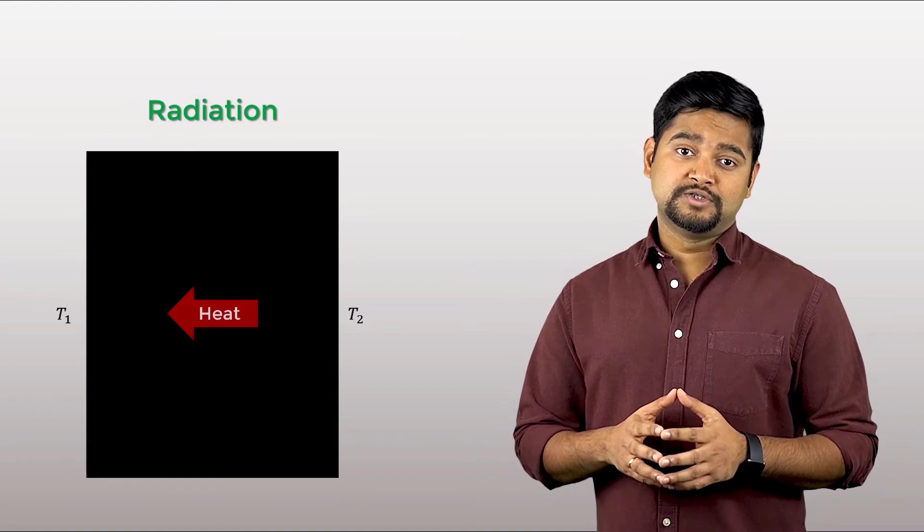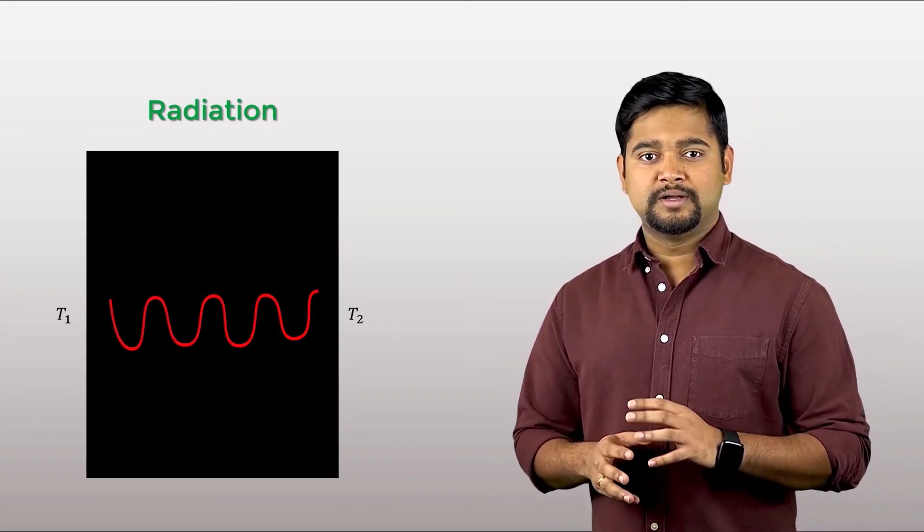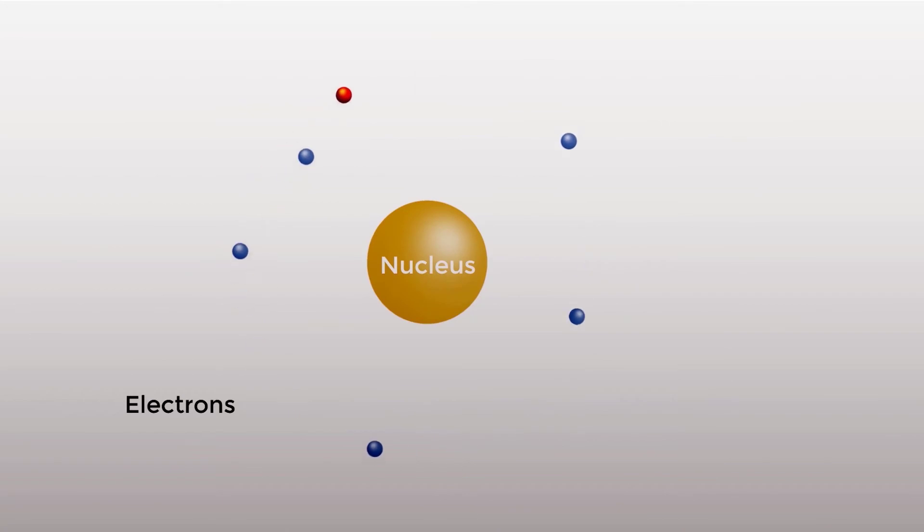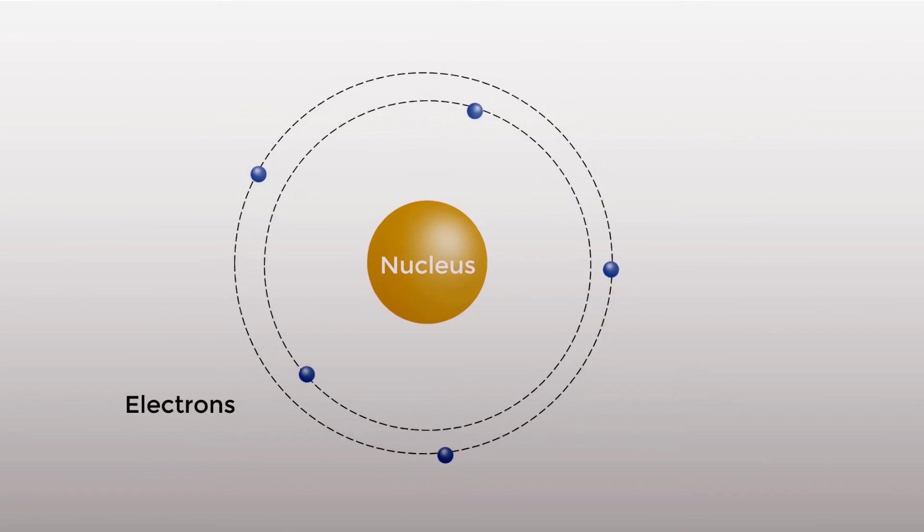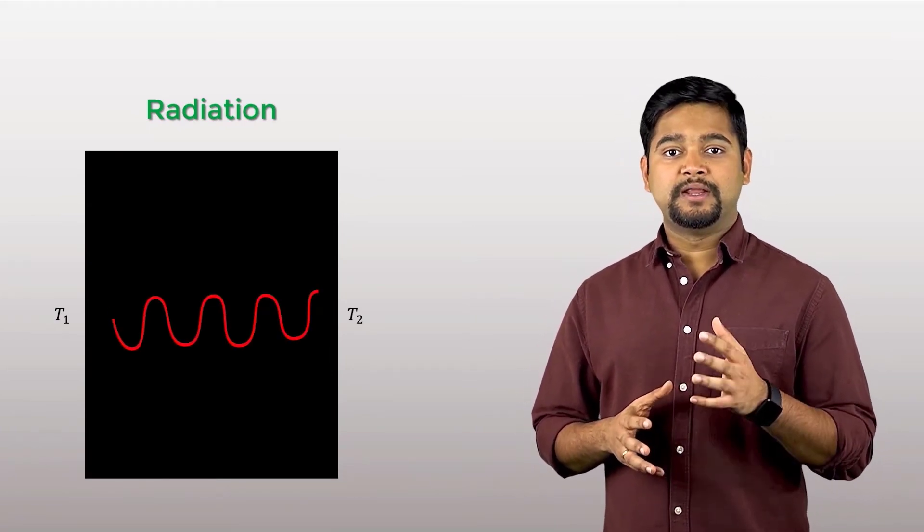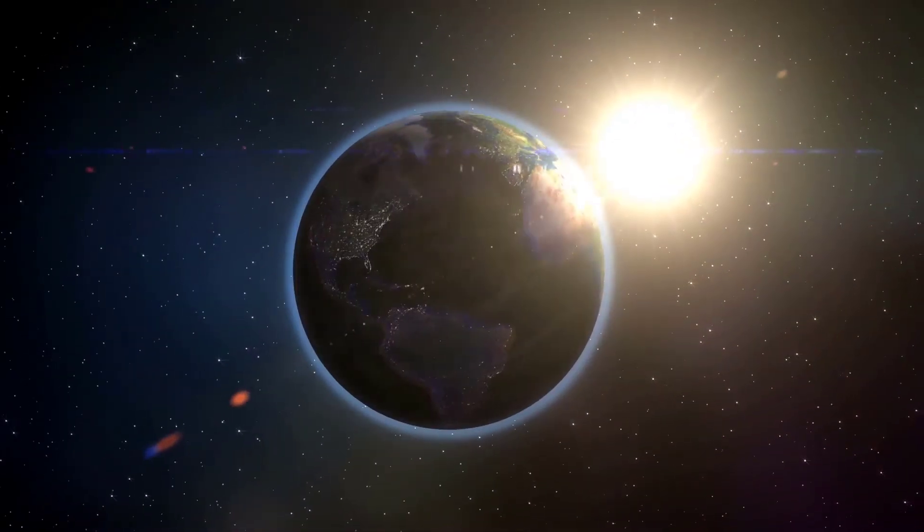Radiation is the emission of energy in the form of electromagnetic waves. All matter at non-zero temperature emits thermal radiation. This emission is due to changes in the electron configurations of the atoms or molecules. And this energy is transported via electromagnetic waves or photons. In the absence of an intervening medium, there is a net heat transfer by radiation between two surfaces at different temperatures. This is how the thermal energy from sun reaches earth.